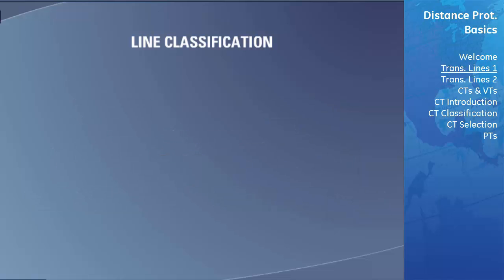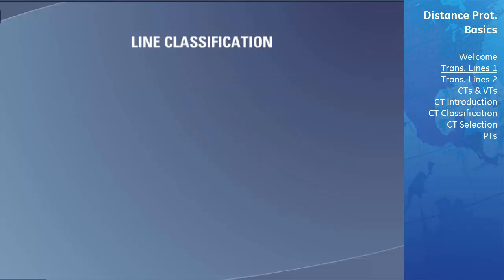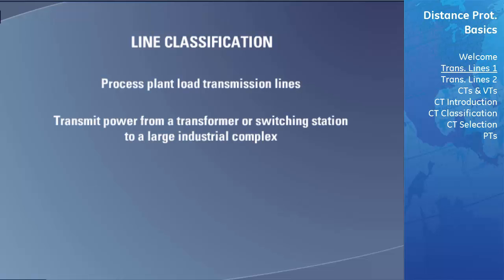Interconnector transmission lines are used to connect one section of a power system to another. Generator export transmission lines are used to transmit power from a generating station to the rest of the grid. Process plant load transmission lines are used to transmit power from a transformer or switching station to a large industrial complex.